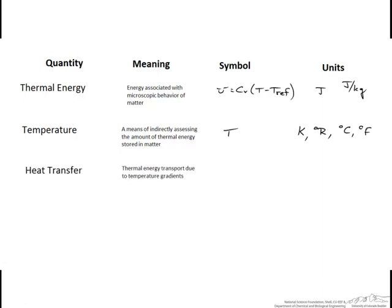What's meant by the term heat transfer is the thermal energy transport due to temperature gradients. Heat flows from a high temperature to a cold temperature. Hot things tend to cool off and cold things tend to warm up. The total amount of heat transfer is symbolized by the capital letter Q. The units of this, we're talking about a total amount of energy transported over some period of time. The units are in joules.